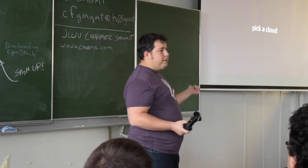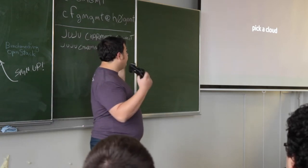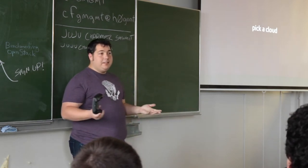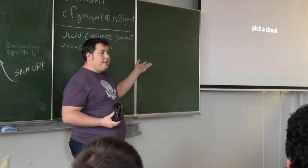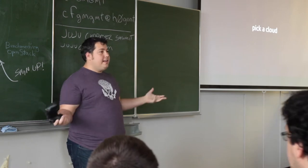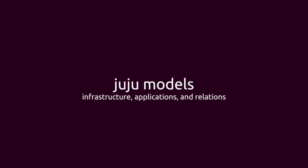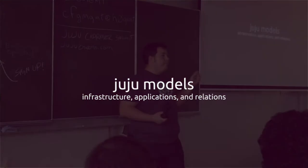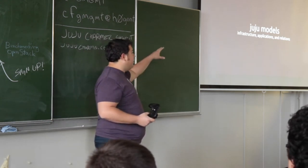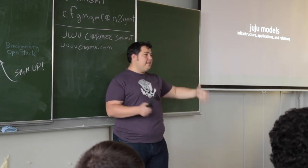Juju works across any kind of infrastructure you may already have or wish to model. By modeling things, it makes it easier for everyone to consume these components. By abstracting away what it means to have infrastructure, applications, and relations, it makes it very easy to port that model against any cloud. What Amazon really is, is a set of machines, a set of disks, a set of networks, and a set of primitives — and those primitives apply to every single cloud you can imagine today.